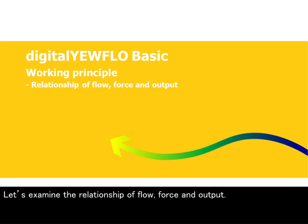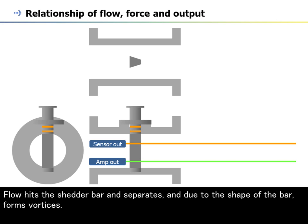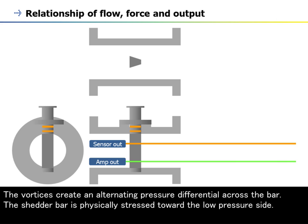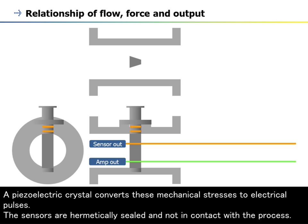Let's examine the relationship of flow, force and output. Flow hits the shedder bar and separates, and due to the shape of the bar, forms vortices. The vortices create an alternating pressure differential across the bar. The shedder bar is physically stressed toward the low-pressure side. A piezoelectric crystal converts these mechanical stresses to electrical pulses. The sensors are hermetically sealed and not in contact with the process.